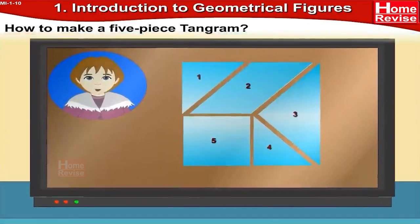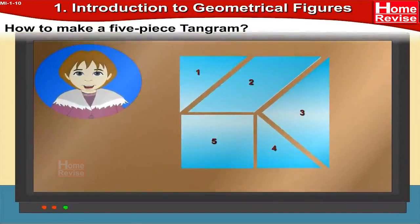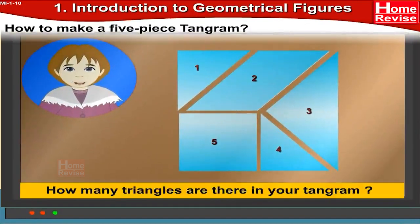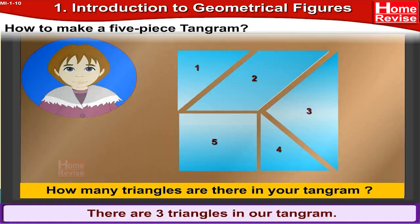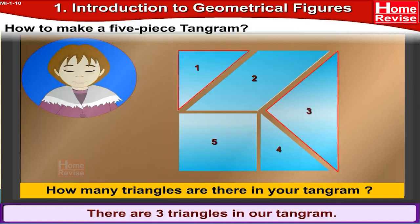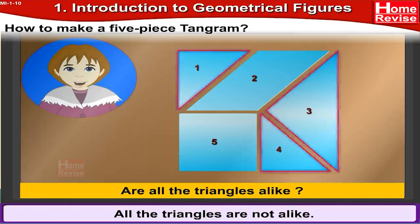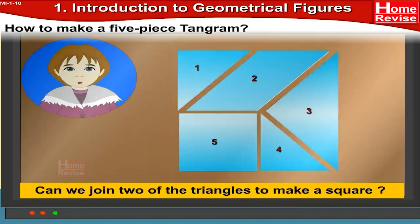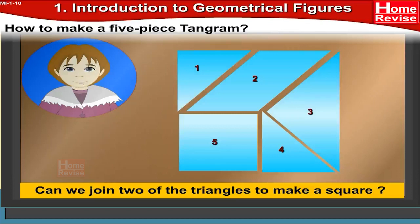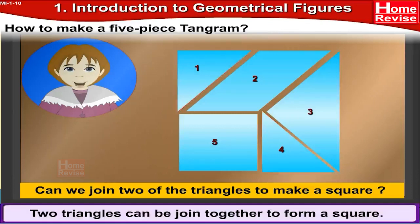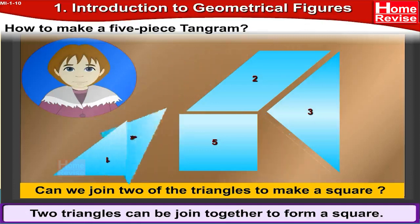Now using the tangram, answer the following questions. How many triangles are there in your tangram? There are three triangles: number one, number three, and number four. Are all the triangles alike? No, all the triangles are not alike. Can we join two of the triangles to make a square? Yes — triangle number one and triangle number four can be joined together to form a square.